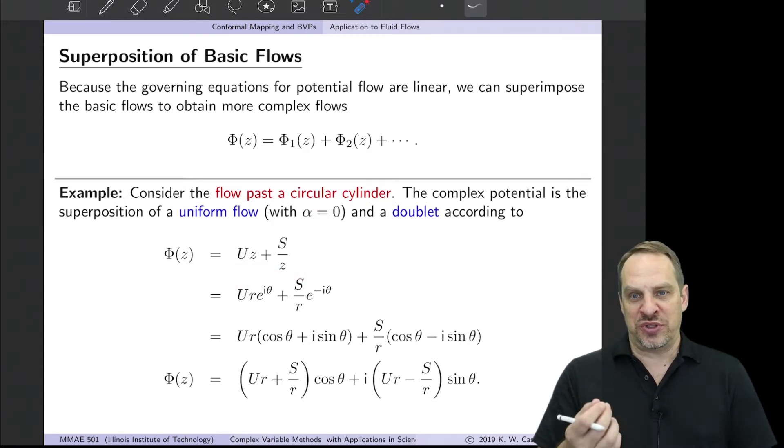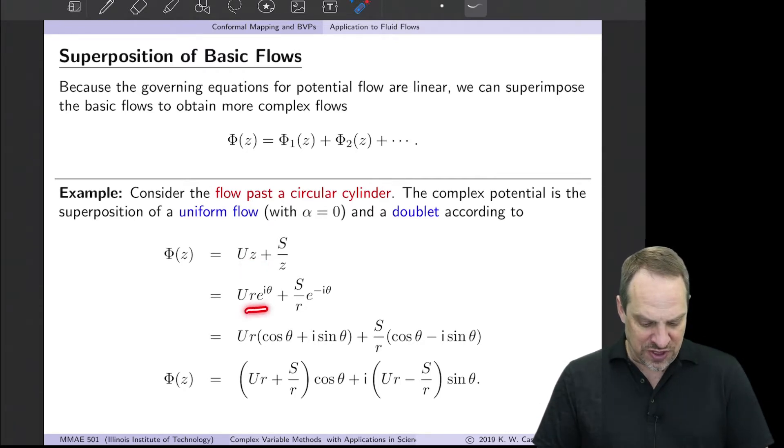As always, we can use x + iy or re^(iθ) for z. Because it's a cylindrical geometry, we'll use polar coordinates. So z is re^(iθ), 1/z is 1/(re^(iθ)). From the Euler formula, e^(iθ) is cos θ + i sin θ, e^(-iθ) is cos θ - i sin θ.